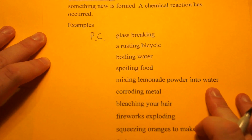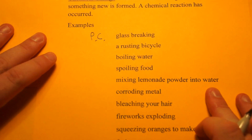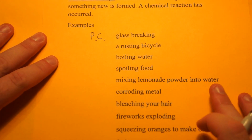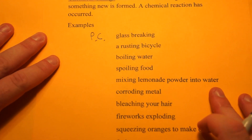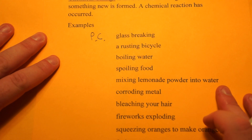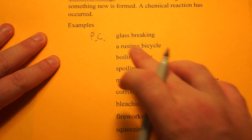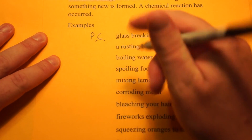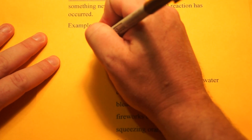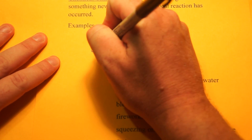Rusting of a bicycle — is it still the same metal that it was, or is it now something new? If it's rusting, that's a chemical reaction, so that's a chemical change.